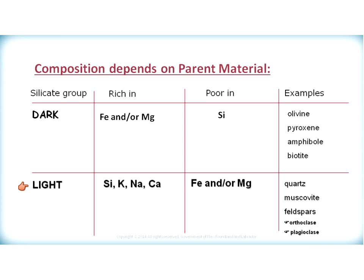In comparison, the lighter silicates are rich in elements such as silica, potassium, sodium, and calcium, and are generally poor in iron and magnesium. These include minerals such as quartz, muscovite mica, and both feldspars — orthoclase and plagioclase feldspar.